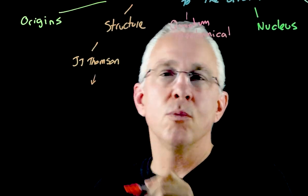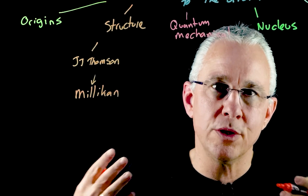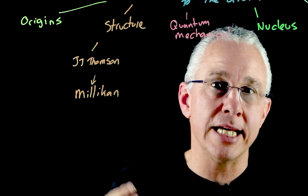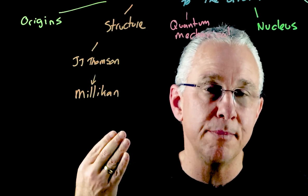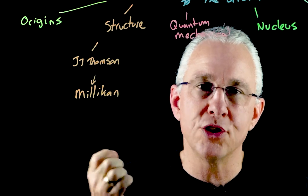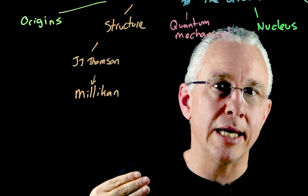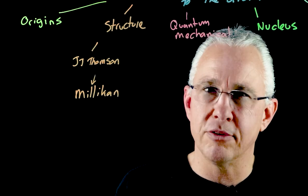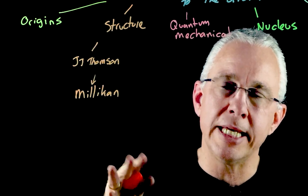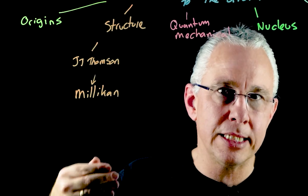Following on from JJ Thomson, we go further with the work of Robert Millikan. Millikan also used the idea of fields — in this case the interaction between electric fields and gravitational fields — to determine the properties of electrons, particularly the value of the charge on the electron.